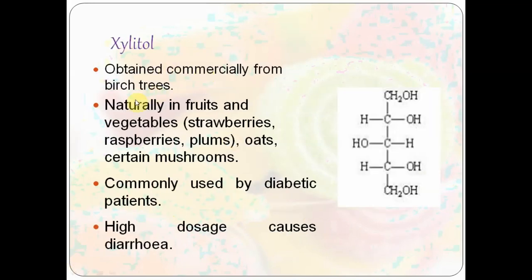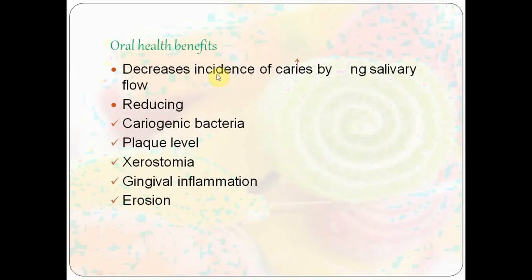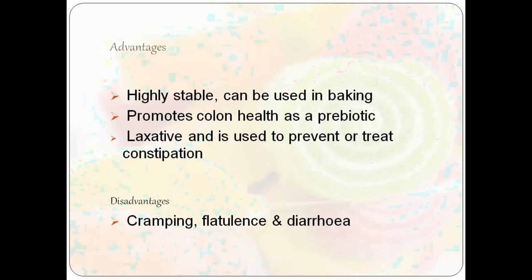Xylitol is another poly alcohol commercially obtained from birch trees and is naturally found in strawberries, raspberries, and plums. It is commonly used by diabetic patients, though high dosage can cause diarrhea like sorbitol. The Turku sugar study conducted in Finland showed that the xylitol group had the highest caries reduction. Oral health benefits include significantly reduced caries, reduced cariogenic bacteria and plaque levels, improvement in xerostomia and gingival inflammation, and reduced erosion. It is highly stable, can be used in baking, promotes colon health as a prebiotic, and has a laxative effect to prevent constipation.